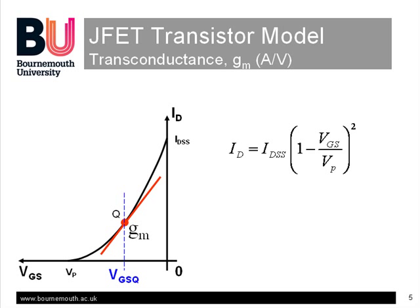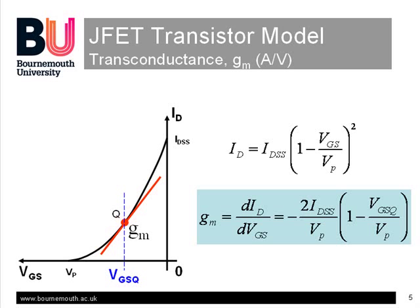Unfortunately, GM depends upon the DC operating point VGSQ. We can measure GM as the slope of the transfer characteristic, or by differentiating the equation to obtain this result, where we can see that GM does indeed depend upon VGS, which we label as VGSQ to emphasize that we want to calculate the JFET model at a particular DC operating point Q.